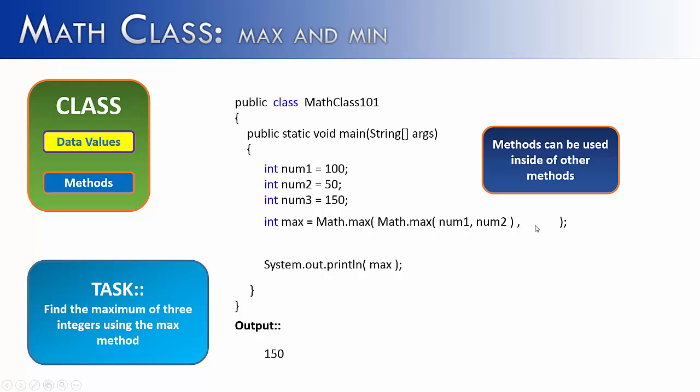It's going to do the same concept as before. It is going to find the maximum of the first two values, and then I've left the second parameter blank. What would go there? The other value that we want to compare. So this would compare the first two values, return 100, and then that 100 would be compared with the third value which is 150. When we run the program it would give us 150, which is the correct result. The reason I showed you this is to show you that methods can be placed inside of other methods, and this is called nesting.